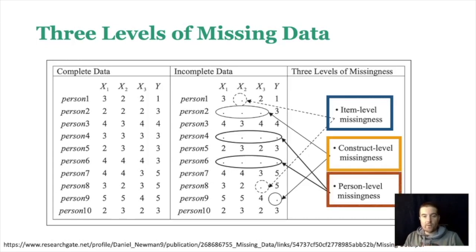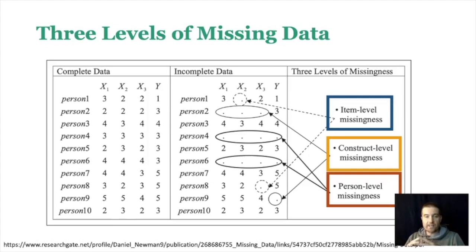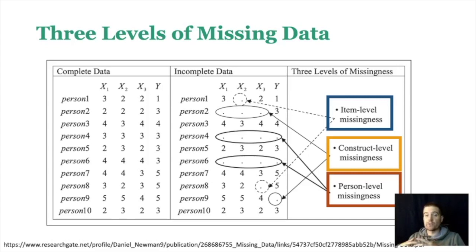The last level is person level missingness, where the individual just doesn't have any information at all — they didn't give you x or y information. That's person level missingness. The seriousness of the missingness depends on the situation itself, but as you get more and more missingness, there's less that you can actually do to help the situation.